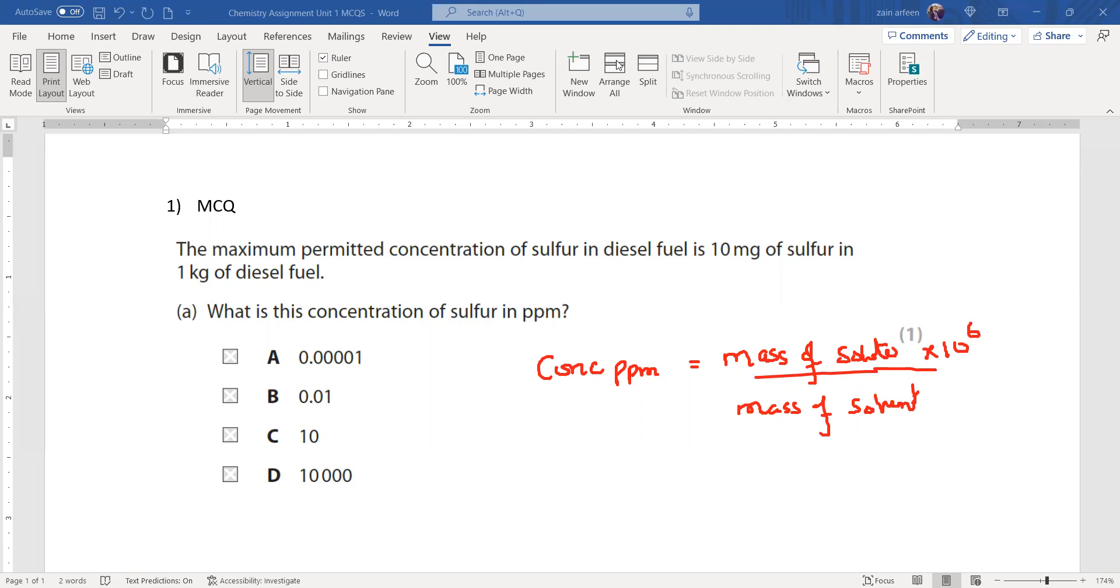But in the question, you can see the units are different. We have this in milligrams and the mass of the diesel in kilograms. So we have to convert this into grams. So we divide by 1000. So this will be 0.01 gram.